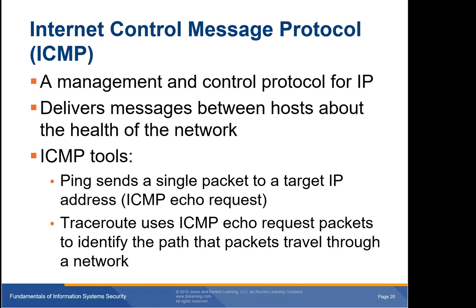The ping command sends a single packet to a target IP address — an ICMP echo request — asking 'are you there?' The computer on the other end can either answer with an ICMP echo reply or ignore the request. Attackers sometimes use ping to identify targets for a future attack, so many system administrators configure their computers to ignore all ping requests. The traceroute command uses ICMP echo request packets to identify the path that packets travel through the network.